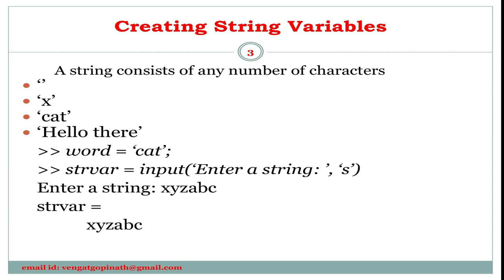There are several ways that string variables can be created. One is using the assignment operator — for example, word = 'cat'. Another method is to read into a string variable using the input function, where the second argument must be included. For example, a string variable gets a value through input, and the string 'xyzabc' is stored in the variable 'sdrvar'.